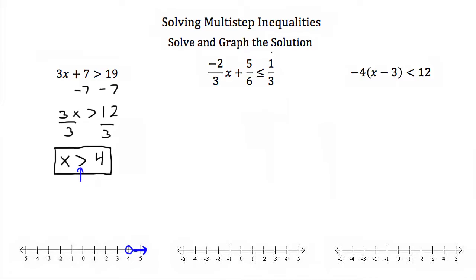Our next example is negative 2/3 x plus 5/6 has to be less than or equal to 1/3. Now I don't like fractions, so the first thing I'm going to do is multiply by the common denominator, which is 6. I'm going to multiply both sides by 6. Negative 2/3 times 6 will be negative 4x, 5/6 times 6 is just 5, and this has to be less than or equal to 1/3 times 6, which is just 2.